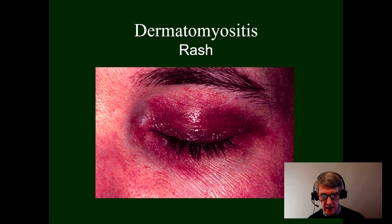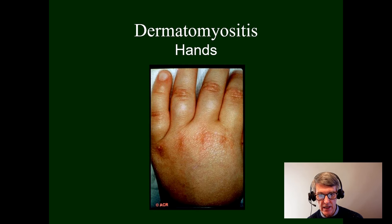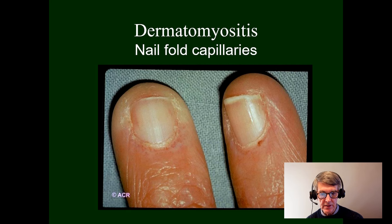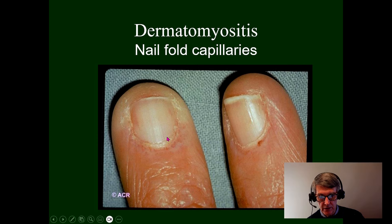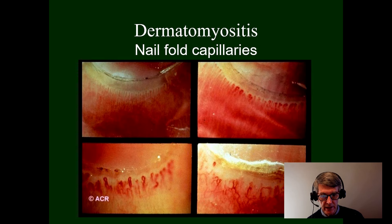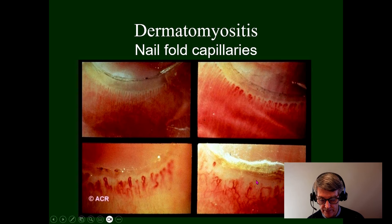Sometimes the skin, especially the eyelids, can become very bright purple — the color of the heliotrope flower — and this is called a heliotrope rash. The skin can sometimes become shiny, atrophic, and edematous, somewhat like scleroderma. There are characteristic capillary nail changes, with dilation of the capillaries and dropout, visible by applying a drop of microscope oil on the cuticle and viewing with a magnifying lens. This is somewhat pathognomonic for dermatomyositis and scleroderma.